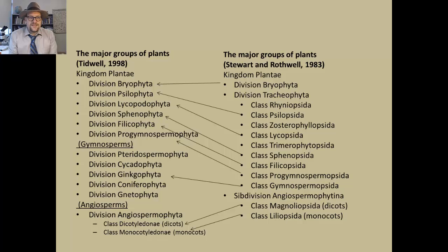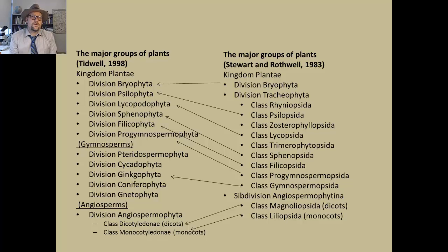I mentioned that plant systematics is debated, so here is a classification of plants from the Stewart and Rothwell book and what William Tidwell lists in his paleobotany book. Many of the names and ranks of those names are different. We will try to use the names listed in the Stewart and Rothwell book, but don't be concerned if I use some different names for the various groups. Note that most of Tidwell's names are divisions and end with -phyta, while Stewart and Rothwell classify many of these groups within classes that end in -opsida. We will be using both of these terms but will try to stick with what is in our textbook.